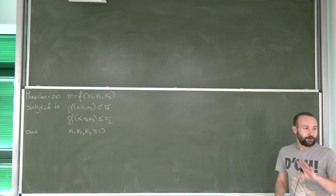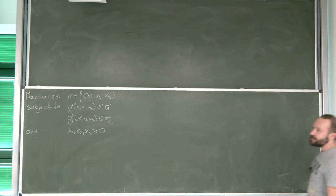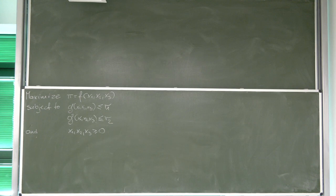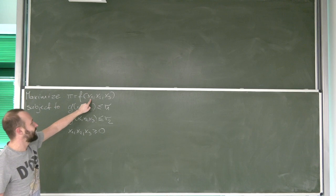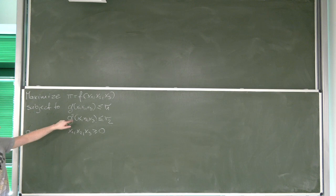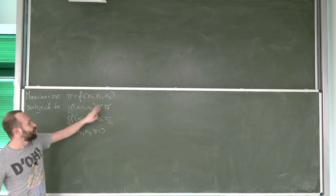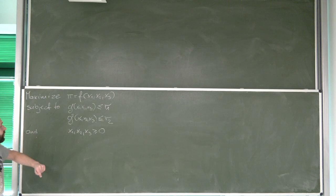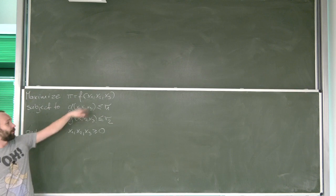We're going to start with an example and through this specific case, even though in general functions, we're going to derive the new types of conditions that we are actually going to use. So this is going to be our problem. We need to maximize pi, which is a function of three variables x1, x2, and x3, subject to two different inequality constraints. So we know that there is a function g1, a function of all three variables x1, x2, and x3, that needs to be lower than some r1, and g2 — another inequality constraint, also a function of all three variables — that needs to be lower than r2.